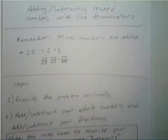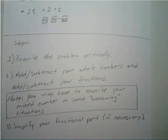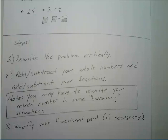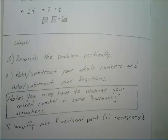Let's look at the steps involved in adding or subtracting mixed numbers. First, you want to rewrite the problem vertically — one on top of the other. Second, you want to add or subtract your whole numbers, then add or subtract your fractions. You may have to rewrite your mixed number in some borrowing problems. Third, you want to simplify your fractional part if necessary.